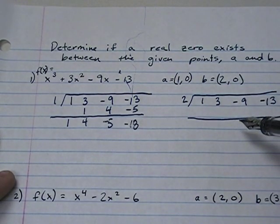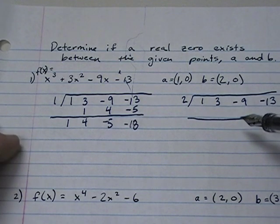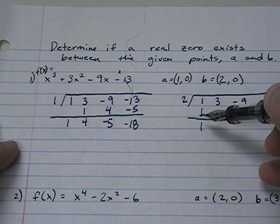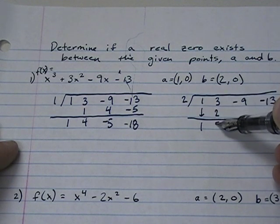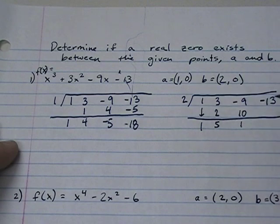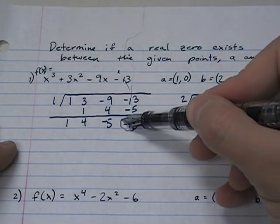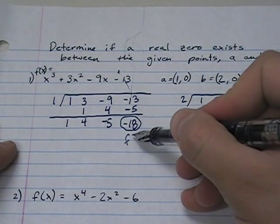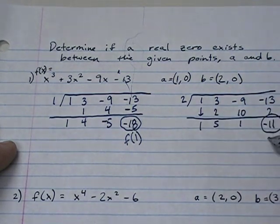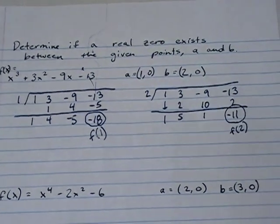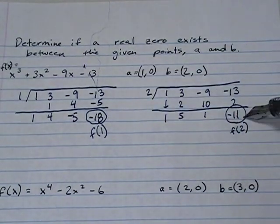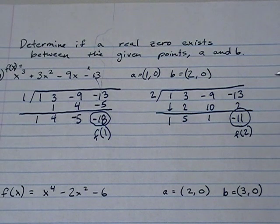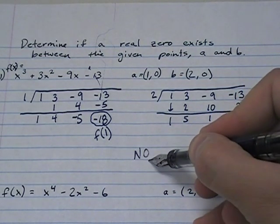And then we turn around and we try this one. Copy, multiply, add, multiply, add, multiply, add. And what happens? This is f of 1 and this is f of 2. It was negative and at 2 it's still negative. So we cannot say for certainty that it is crossed the x-axis. Therefore, the question is, is there a zero between points A and B? And the answer is no.